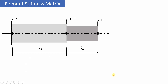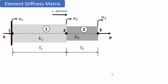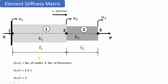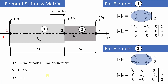This concept is very important for the formulation of the global stiffness matrix. Suppose we have two elements 1 and 2 with stiffnesses k1 and k2, subjected to load P at node 3. u1, u2, and u3 are the corresponding deformations, and x is the direction under consideration. Element 1 is formed by nodes 1 and 2; element 2 is formed by nodes 2 and 3. There are 3 degrees of freedom, so the matrix will be of 3×3 form.